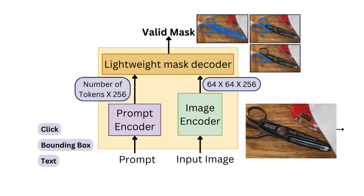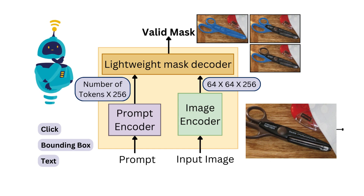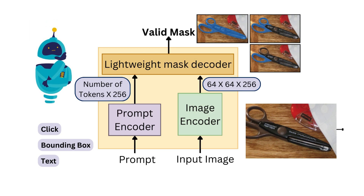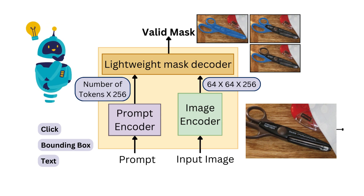SAM generates three segmentation masks, capturing segments at different depths: the whole, the part, and the subpart. SAM's ingenious design enables it to handle prompt ambiguity — as seen in the example of a scissor — by generating masks for the entire object, two handles, or just one handle.